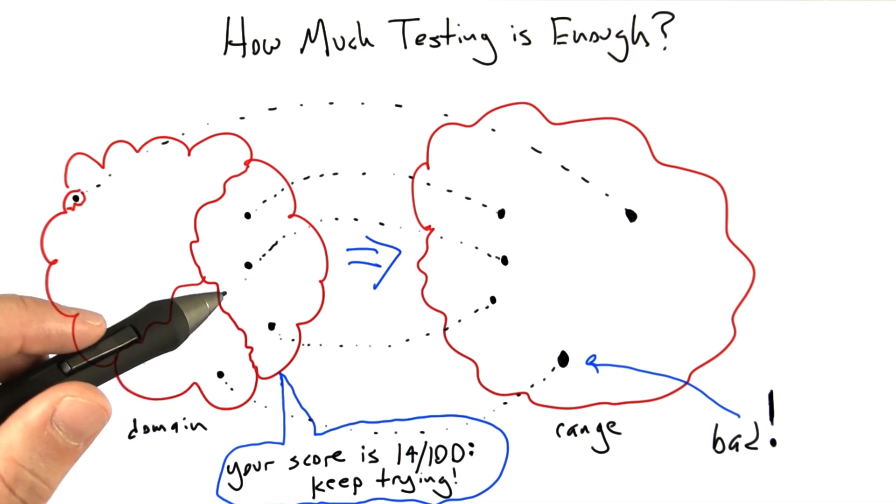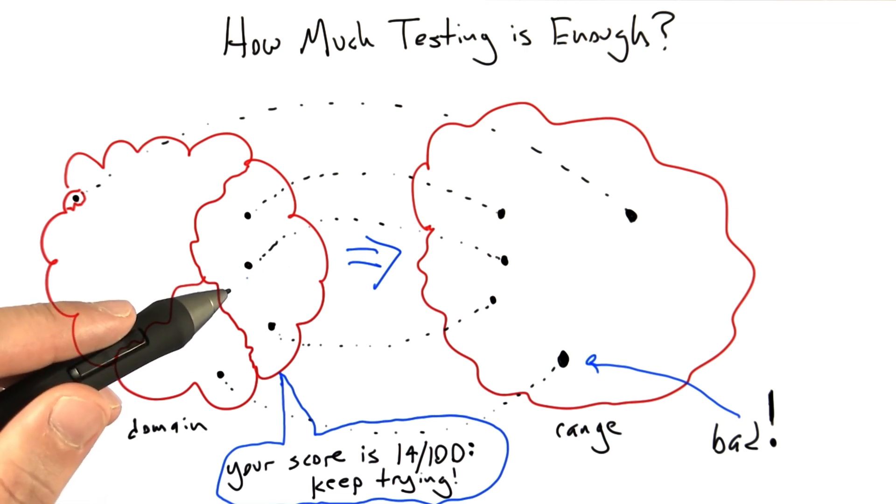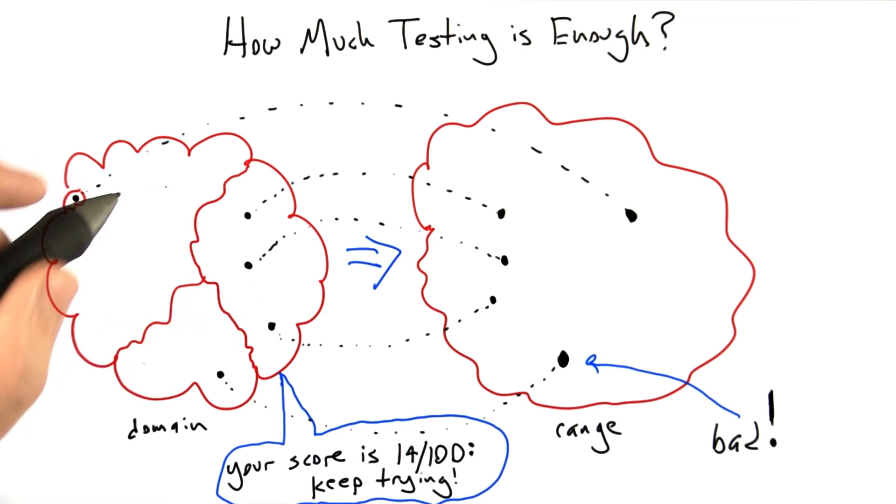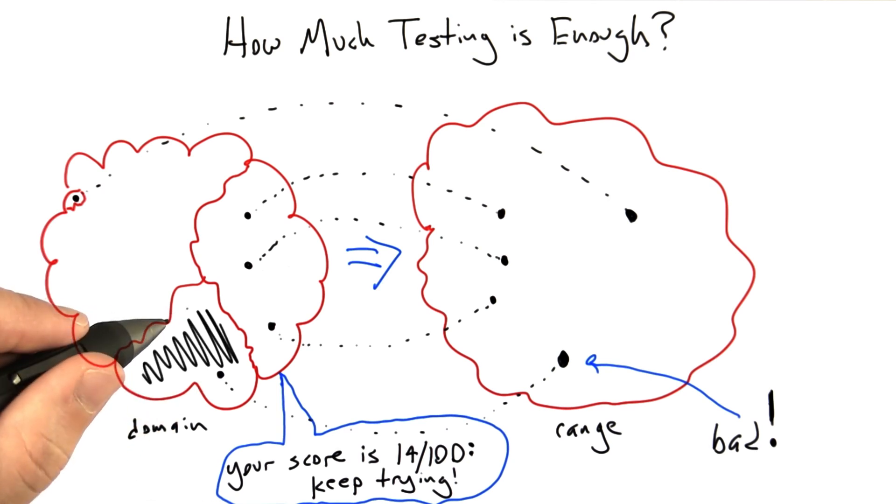It turns out there are a lot of different reasons that we might want to assign a score to our testing effort. Probably the main one is that this helps us find part of the input domain that need more testing. So, for example, if we can increase our score by testing this part of the domain, we're naturally going to be led to do that and our testing effort will improve.